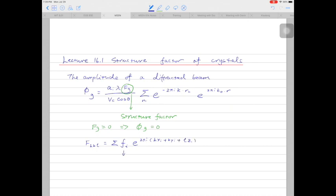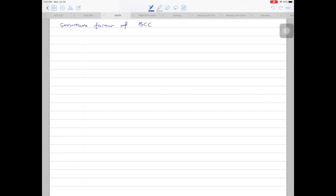The fi here is something we call scattering factor. We'll come back to this later. Let's start with something very simple, like BCC.